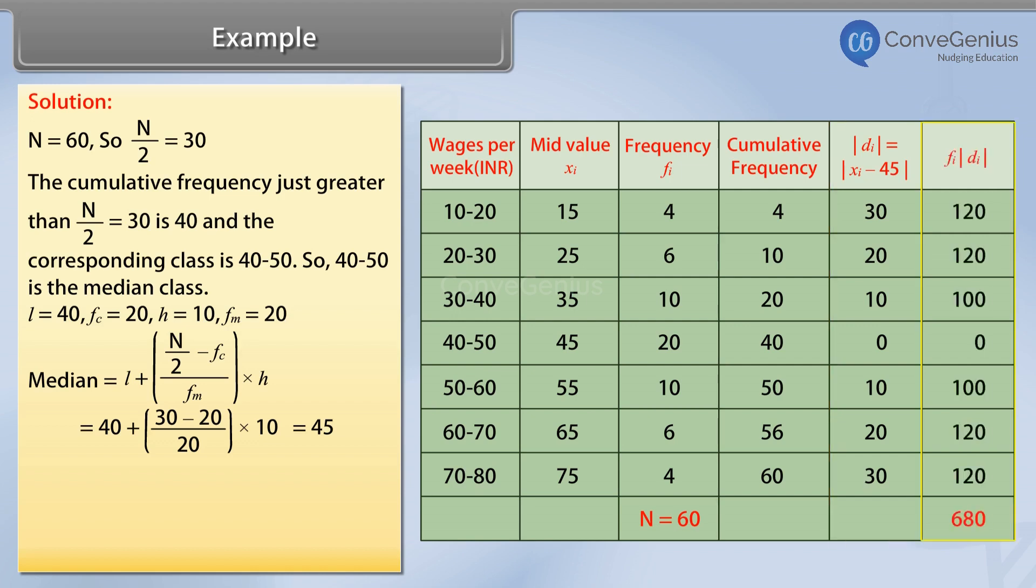In the sixth column, we find the product of frequency fi and di. Their sum is found to be 680. And finally, we find the mean deviation by summation of the product between frequency and di divided by capital N as 11.33.